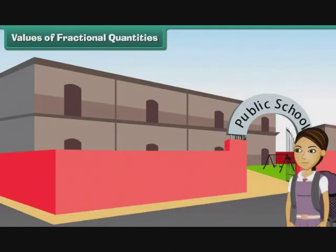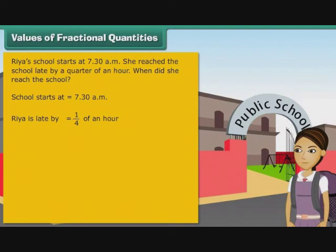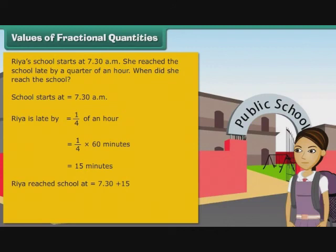Here is one more example. Riya's school starts at seven thirty a.m. She reached school late by a quarter of an hour. When did she reach the school? School starts at seven thirty a.m. Riya is late by one-quarter of an hour, which means one-fourth multiplied by sixty minutes, which equals fifteen minutes. Riya reached school at seven thirty plus fifteen minutes, which means seven forty-five a.m.